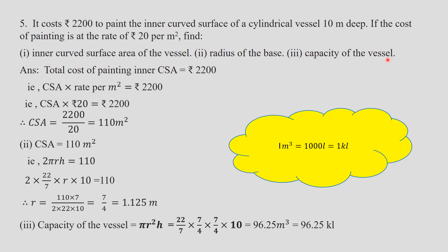For the capacity of the vessel, use volume = pi r square h = 22/7 into (7/4) squared into 10. The answer is 96.25 meter cube. Since 1 meter cube equals 1000 liters, which is also written as 1 kiloliter, the capacity is 96.25 kiloliters.